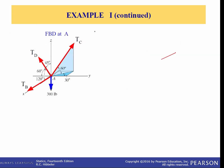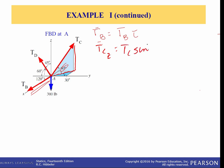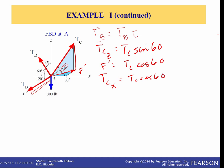TB as a vector in Cartesian form: TB is all along the X axis, so it's the magnitude of TB in the I direction. For TC, TC sub Z equals the magnitude of TC times sine of 60. The vector F' in the XY plane equals TC times cosine of 60. Then TC sub X equals F' times cosine of 60, which is in the negative X direction.